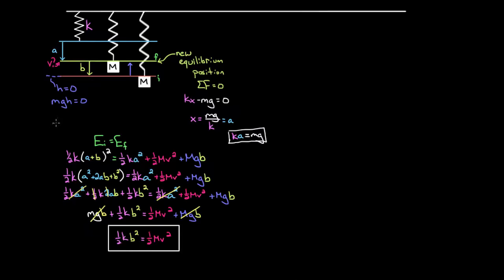To summarize: when solving vertical spring problems, you can measure your spring displacement from the natural unstretched length of the spring, include gravitational potential energy, and get the right answer. But since those terms always cancel, the alternative is to measure the spring displacement from the new equilibrium position, leave off all mention of gravitational potential energy, and get the same answer. Think of gravity as simply shifting the equilibrium position down, and the mass and spring behave just as they would on a horizontal surface — as long as you only consider displacements from that new equilibrium position.